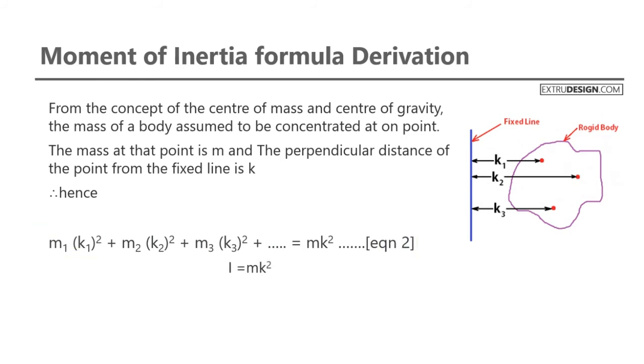We can write I equals m k square, where k is known as the radius of gyration.